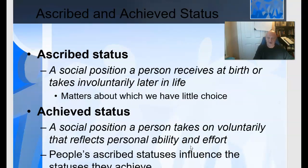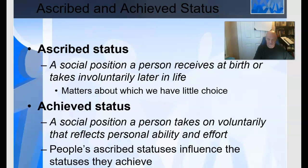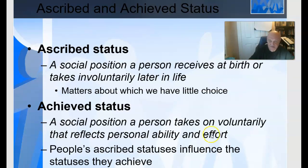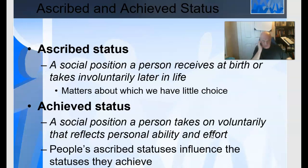There are two kinds of social statuses we need to be aware of. Ascribed status is a social position a person receives at birth or takes on involuntarily later in life — for example, being male, or my age. An ascribed status is a status that we're born into.